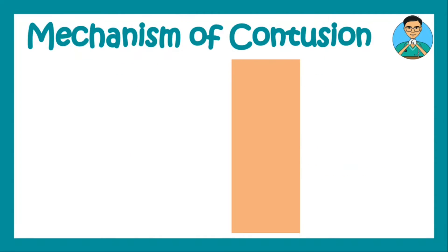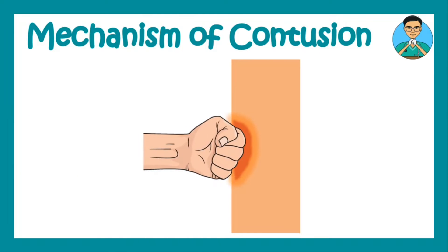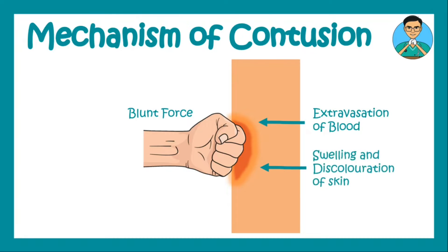Now how does contusion occur? When somebody punches you, contusion develops. In this scenario you can see that the force applied is blunt. There is extravasation of blood, there is swelling and discoloration of the skin, and the contusion appears to have some irregular margin.